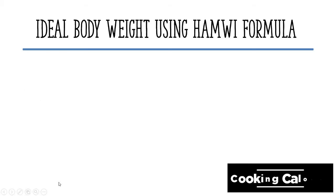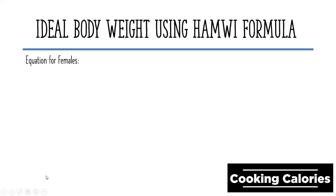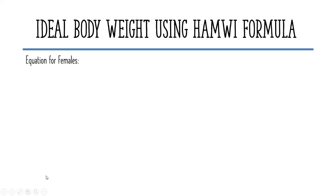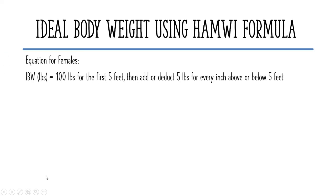Now let us proceed to the calculation of ideal body weight for females. The equation is 100 pounds for the first 5 feet, then add or deduct 5 pounds for every inch above or below 5 feet.